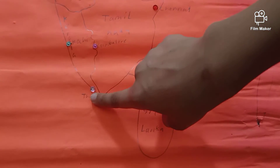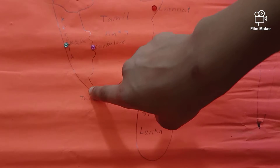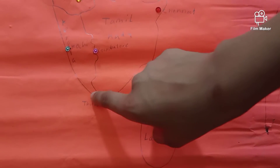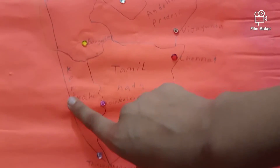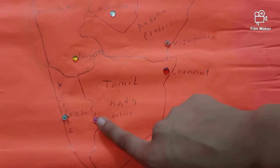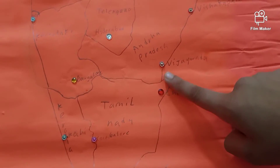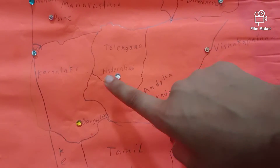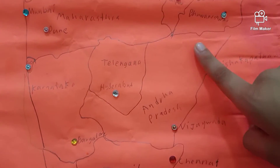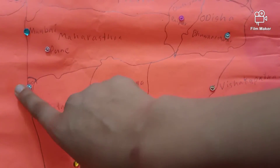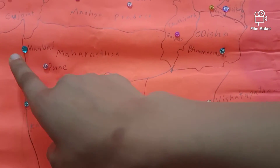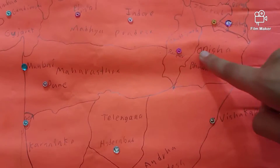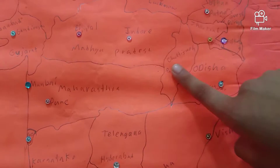This is Thiruvananthapuram, also known as Trivandrum. Kochi, Coimbatore, Chennai, Vijayawada, Bangalore, Hyderabad, Visakhapatnam, Goa, Pune, Mumbai, Bhubaneswar.